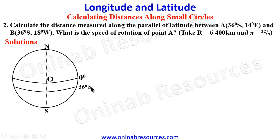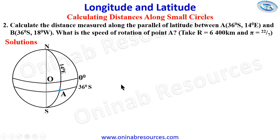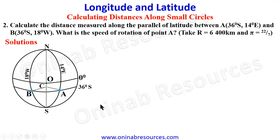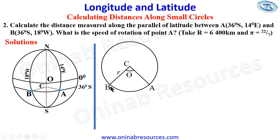We get the common latitude 36 degrees south. The longitude of A is 14 degrees east, so we have 14 degrees to the east. Point A is at the intersection of longitude 14 degrees east and latitude 36 degrees south. Point B has longitude 18 degrees west, and point B is at the intersection of 36 degrees south and 18 degrees west. This is still along a small circle where we locate center C and calculate the small radius, bringing out the sector.